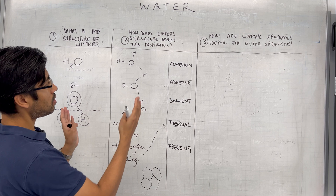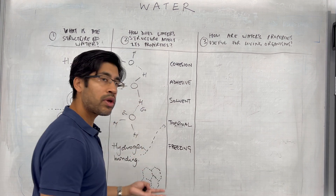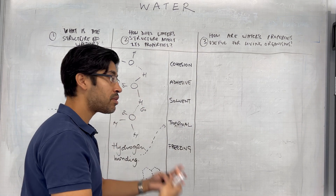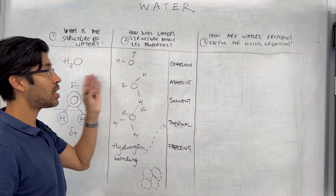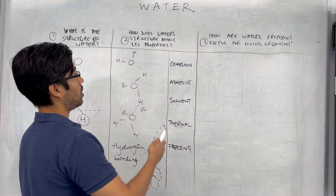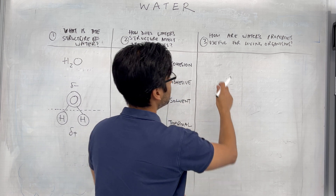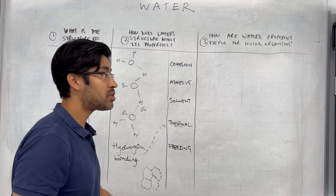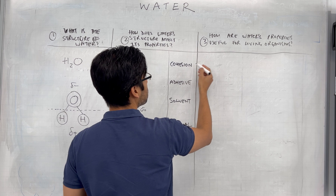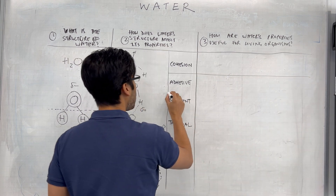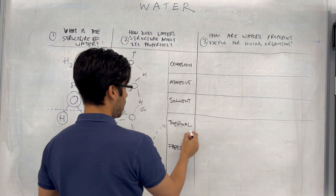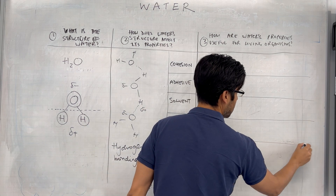The point of this video is not to be super thorough — it's about the revision process. Three simple questions, get a piece of paper, answer those questions, and do it again and again until you are good enough. Now the third part: how are these properties useful for organisms? We want to give some examples of where these properties are useful. This does not have to be an exhaustive list — if anything is lacking, check the textbook and add it to your notes.